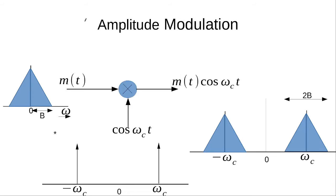We can also visualize the amplitude modulation operation in the frequency domain. Suppose the Fourier transform of m(t) is this signal. We can see that this signal is located at 0 Hz, and the bandwidth of this signal is measured from this point to this point, giving a bandwidth of b.